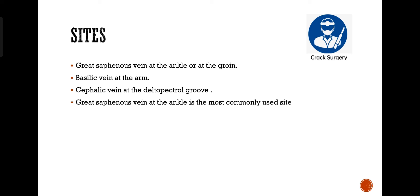Sites: great saphenous vein at the ankle or at the groin, basilic vein at the arm, cephalic vein at the deltopectoral groove. The great saphenous vein at the ankle is the most commonly used site.